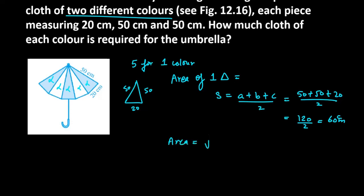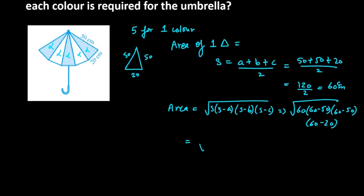Then you can find the area of the triangle. Area of the triangle is root S times S minus A times S minus B times S minus C. Putting all the values in it, it will give you 60, 60 minus 50, then you have 60 minus 50 again and then you have 60 minus 20. Now we can take the root of it. 60 minus 50 is 10, 60 minus 50 is 10, 60 minus 20 is 40.